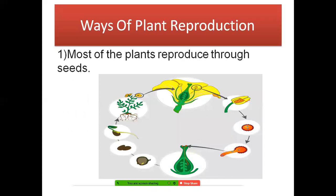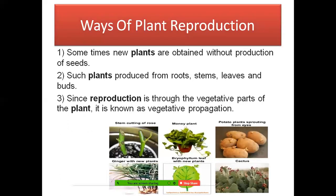The first way of plant reproduction is through seeds — this is called sexual reproduction. Sometimes new plants are obtained without the production of seeds. Such plants are produced from roots, stems, leaves, and buds. Since reproduction is through the vegetative parts of the plant and not from seeds, it is known as vegetative propagation. You can see examples in the pictures.